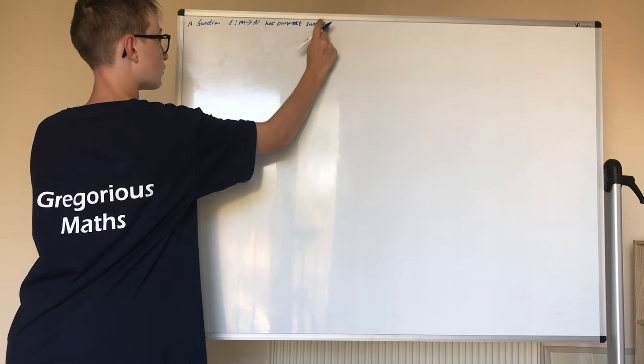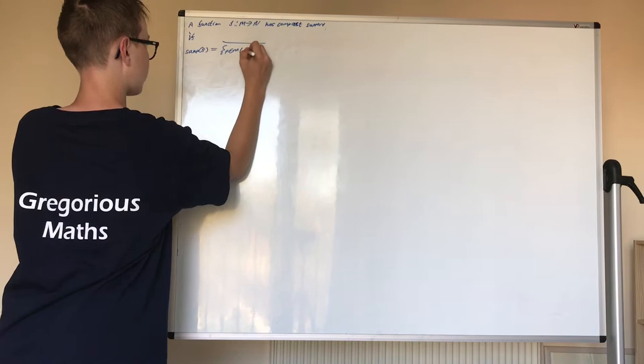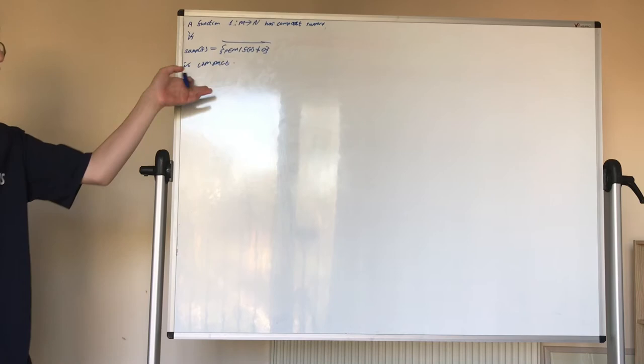Compact support if the support of F, which is the closure of the set of P in M such that F of P is not equal to zero, is compact, which makes sense as to why it's called compact support. The support is compact.